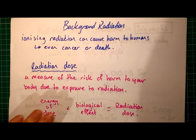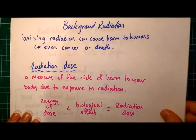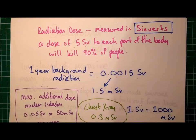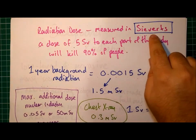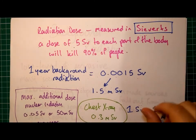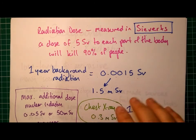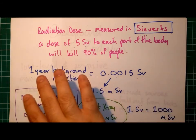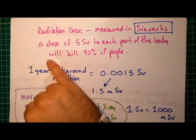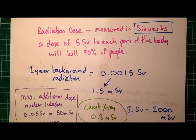For GCSE, you only need to consider radiation dose. Radiation dose is measured in sieverts. It's important that you remember that unit, because you'll be expected to recall it in exams. Just to give you an idea of the scale — a dose of 5 sieverts to each part of the body is enough to kill 90% of people.